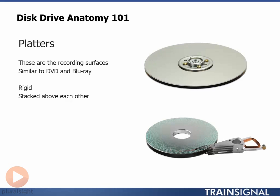All modern disk drives contain multiple platters, and all platters are stacked above each other in what's called a cylinder. The graphic at the bottom right-hand corner of this slide shows two platters stacked directly above each other. And if you were to get a microscope out and take a look at these platters, you would see that the surfaces are insanely flat. The absolute perfection and flatness of the surface of a disk drive platter is one of the reasons we referred to the disk drive as a marvel of modern engineering.